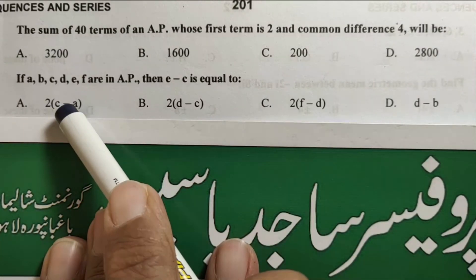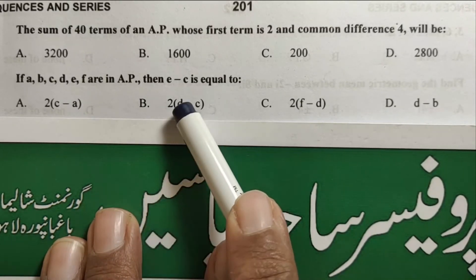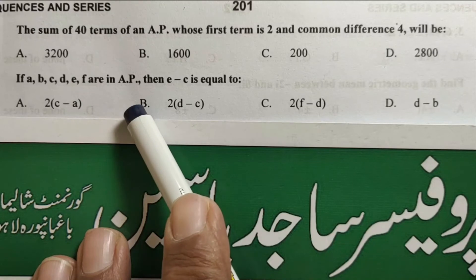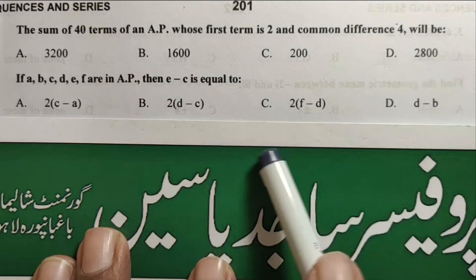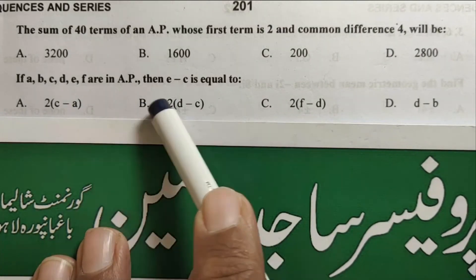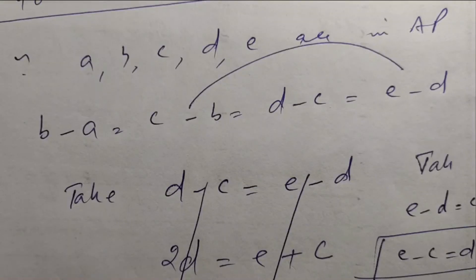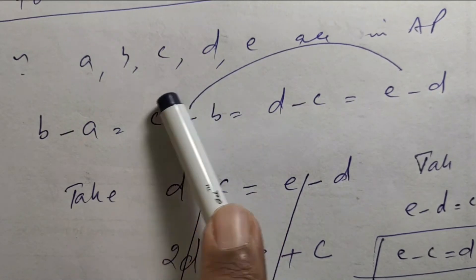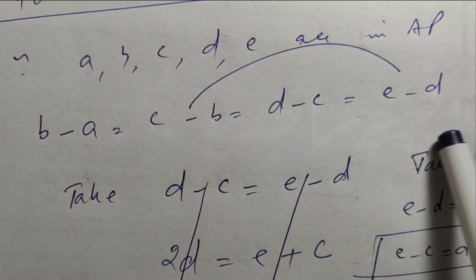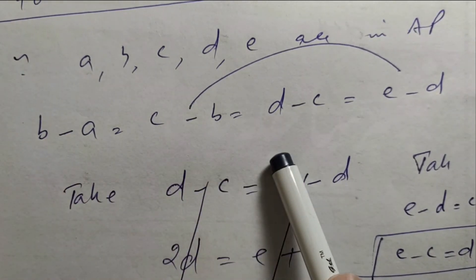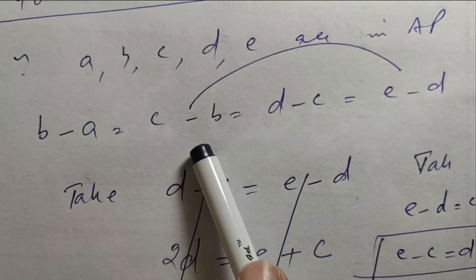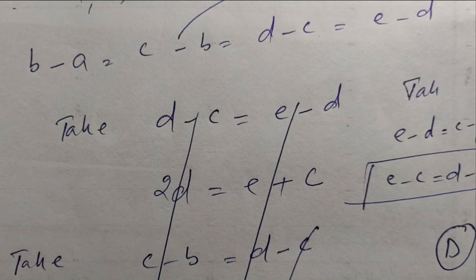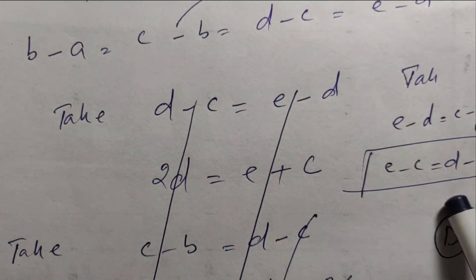If A, B, C, D, E, F are in arithmetic progression, then E minus C is equal to — which option is correct? Since A, B, C, D, E, F are in AP, the common difference is constant: B minus A equals C minus B equals D minus C equals E minus D. From D minus C equals E minus D, we get E minus D equals C minus B. Adding these, E minus C equals D minus B.